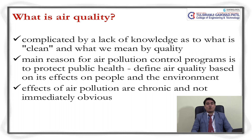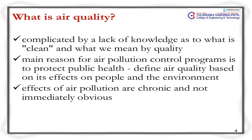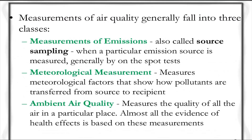Measurement of air quality generally falls into three categories: measurement of emissions, meteorological measurement, and ambient air quality. We will first focus on measurement of emissions — what pollutants are being emitted around us and what harmful impacts they may have. This is also called source sampling.